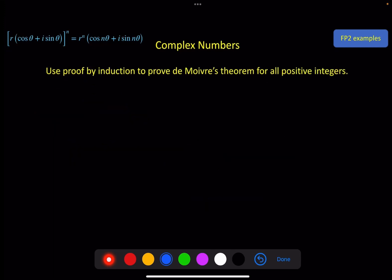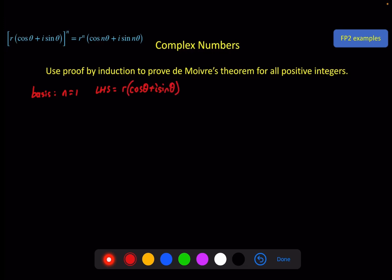To prove De Moivre's theorem — which you may need to do in an exam — we use proof by induction for all positive integers. The basis step: show it's true for n equals 1. The left hand side gives r(cosθ + i sinθ)¹, which is just r(cosθ + i sinθ). The right hand side gives r¹(cos(1·θ) + i sin(1·θ)), which is the same thing. So it's true for n equals 1. Then the assumption: this statement holds when n equals k.